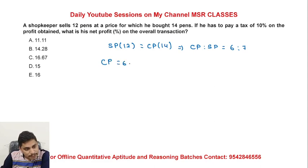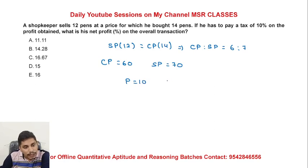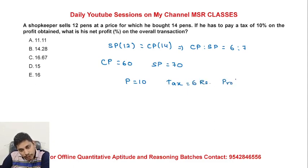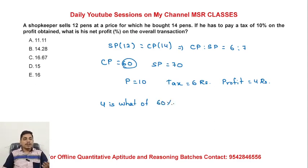Let the cost price be 60. He sells for 70, so profit is 10. He pays a tax of 60%, meaning he pays 6 pence in tax. So his actual profit is only 4 pence. Tax is 6 pence. So net profit is 4 pence. 4 is what percentage of 60? 4 pence is 15% of 60 rupees.